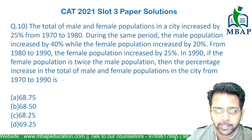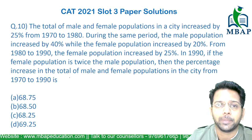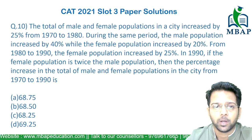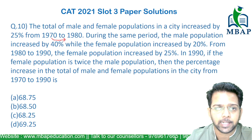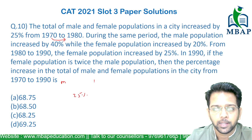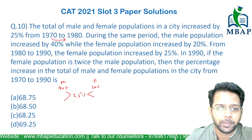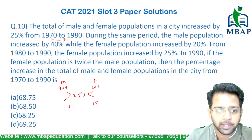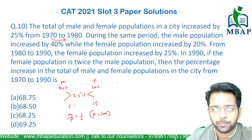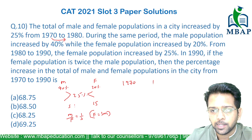Let's start with the proportion of male and female in 1970. From 1970 to 1980, together everyone is growing by 25%. On one side we have male, on the other side female. Male population is going up by 40%, female by 20%. Using allegation, this side will be 15, this side will be 5, so male to female ratio is 1:3, or female equals 3 times male.